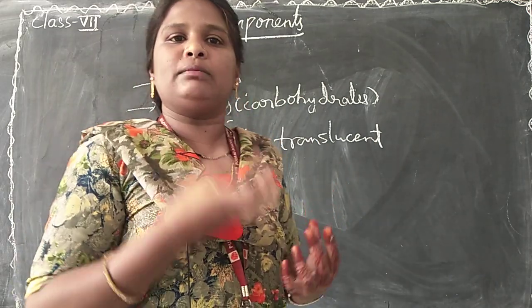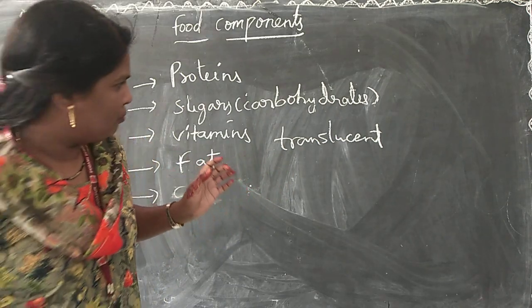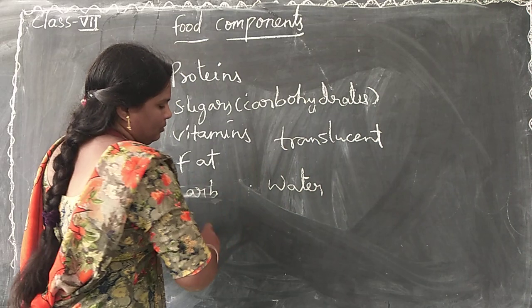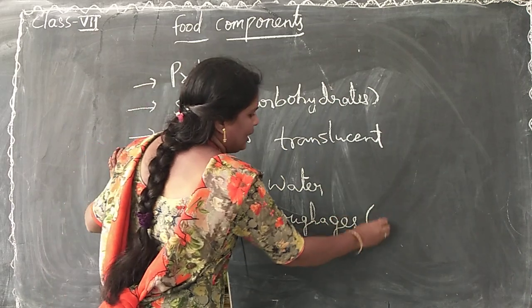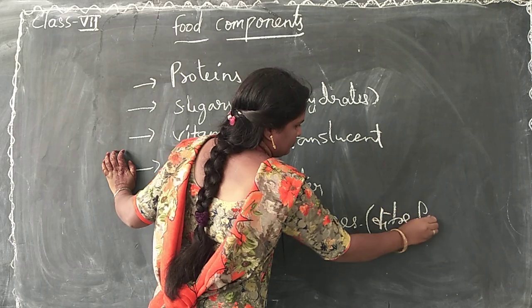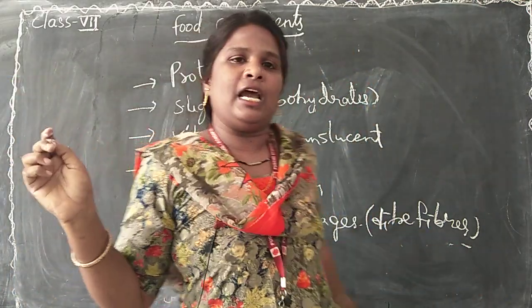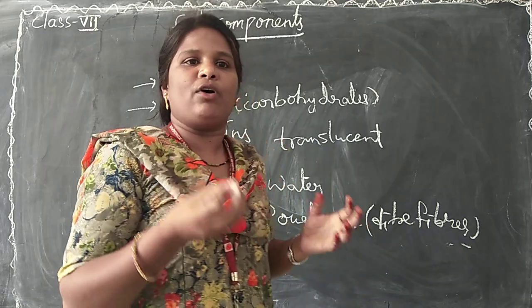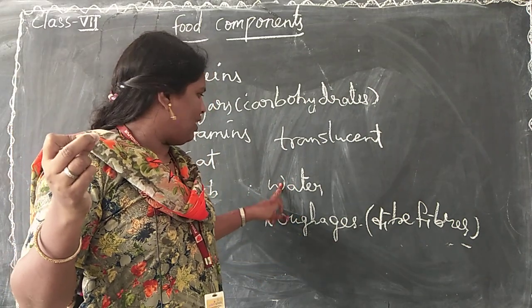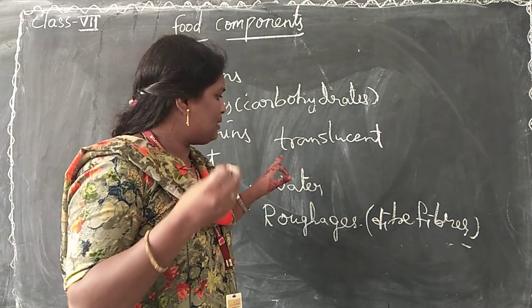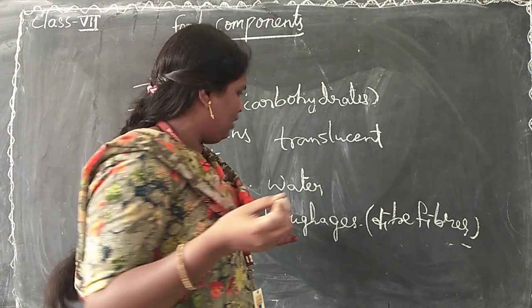Movements of the digestive tract, digestion — for this purpose we need water. Water is essential for our digestive system. Roughage — roughage are dietary fibers. Why do we need this roughage and dietary fiber? These roughage help us with constipation and easy bowel movement. We require this roughage. Along with these food components, we require roughage and water. Water is required for the digestive tract, digestive system, and easy movement in the digestive tract. These roughage are used for easy bowel movement.